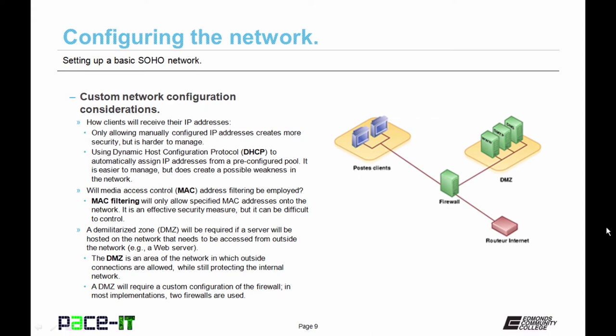So maybe you'll use DHCP but you want to control who connects to your network. You can do that using Media Access Control filtering, or MAC filtering. MAC filtering only allows specified MAC addresses onto the network. It's an effective security measure, but it can be difficult to control.